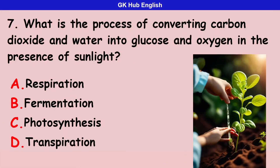Seventh question: what is the process of converting carbon dioxide and water into glucose and oxygen in the presence of sunlight? Option A is respiration. Option B is fermentation. Option C is photosynthesis.